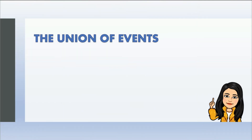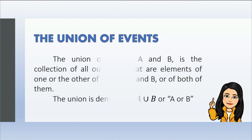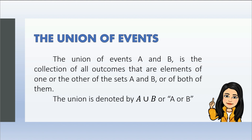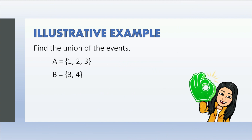Aside from simple and compound events, we also have the union of events. The union of events A and B is the collection of all outcomes that are elements of one or the other of the sets A and B, or of both of them. The union is denoted by A union B, or A or B. Union is like combining the terms, but we do not put duplicate terms. For instance, if we have two sixes, we will only write one six in the union of events. For example, find the union of the events: Event A consists of one, two, and three; Event B consists of three and four. For our solution, A union B consists of one, two, three, and four — one, two, and three from A; three and four from B. But as mentioned, we will only write one three.